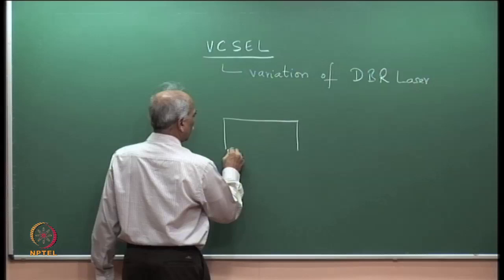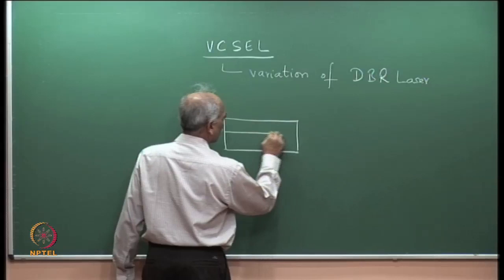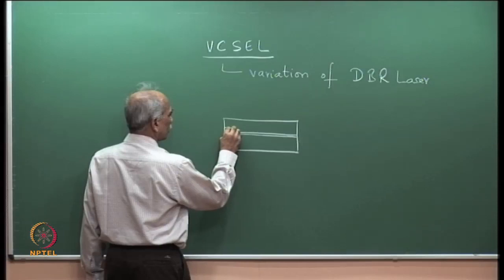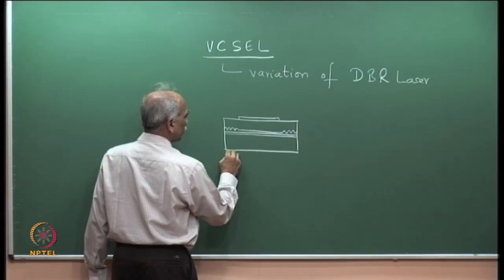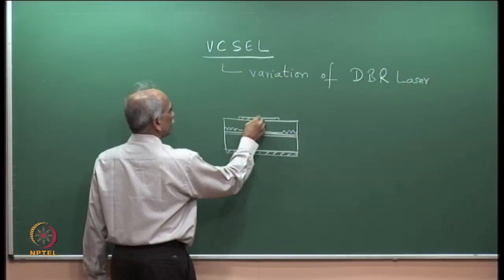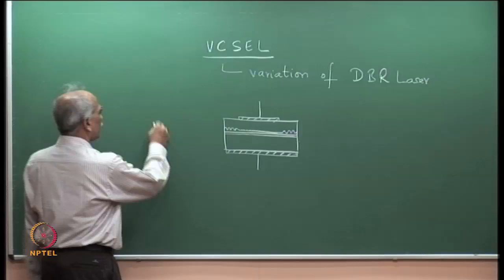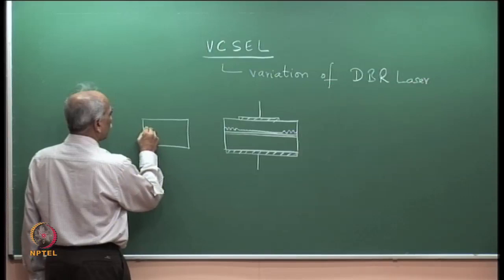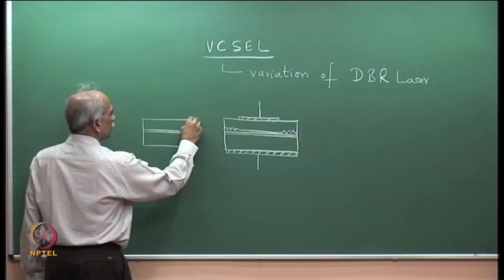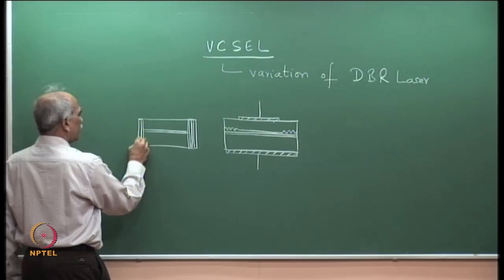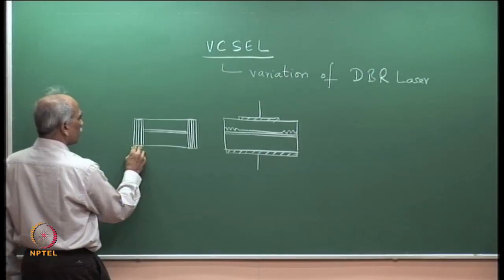Recall the DBR structure: here is the active region and there are periodic corrugations — a periodic structure. The frequency-selective periodic corrugations form the DBR, which is basically a Fabry-Perot cavity with frequency-selective reflection layers. Each layer is of thickness lambda divided by 4n. These are the Bragg stacks.